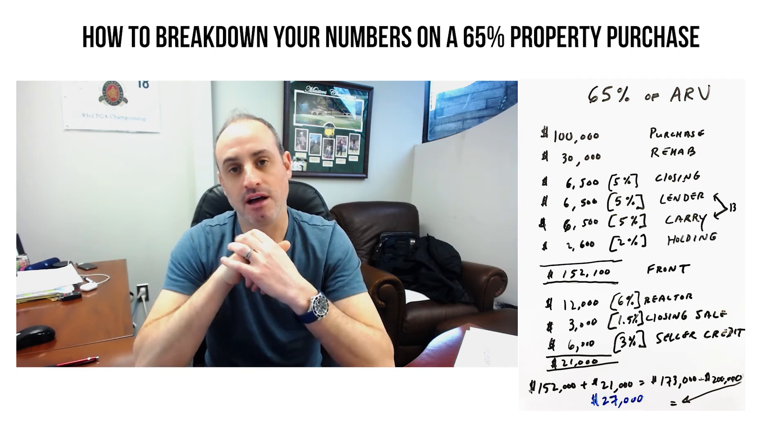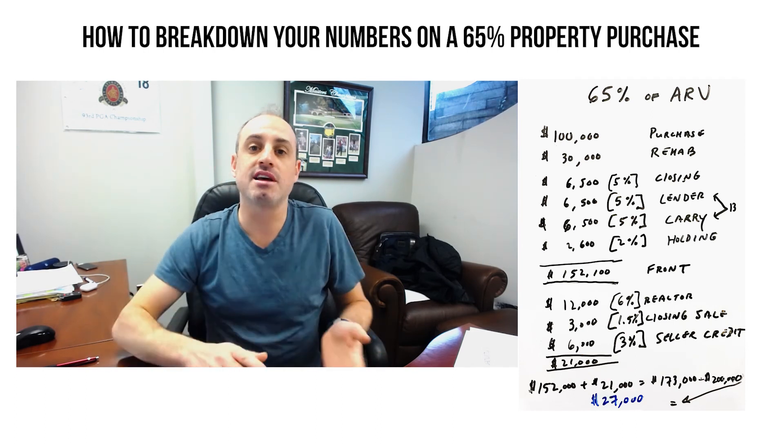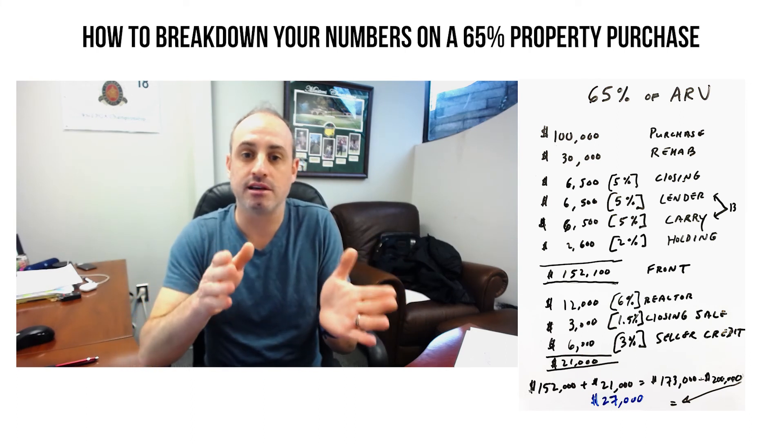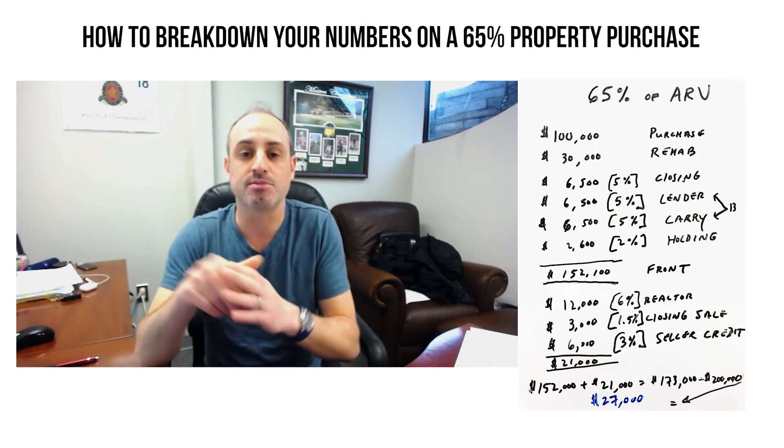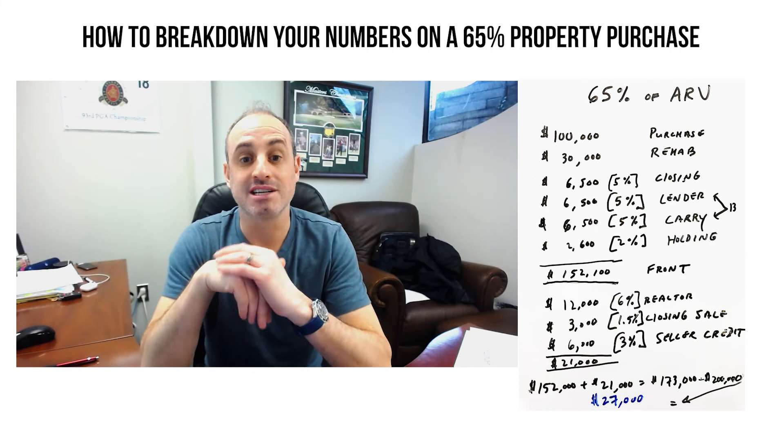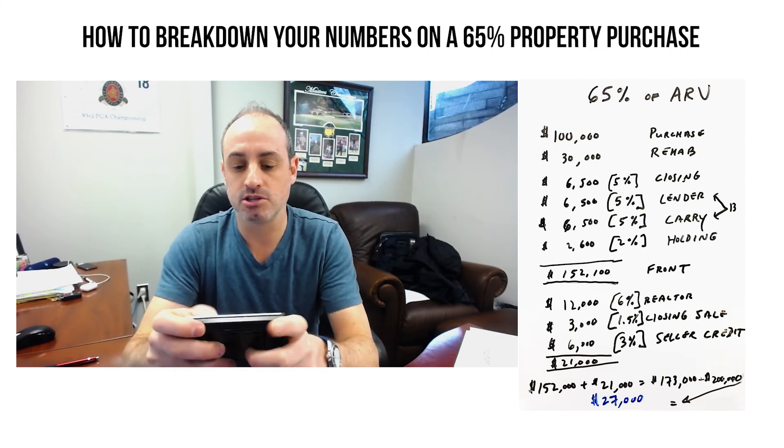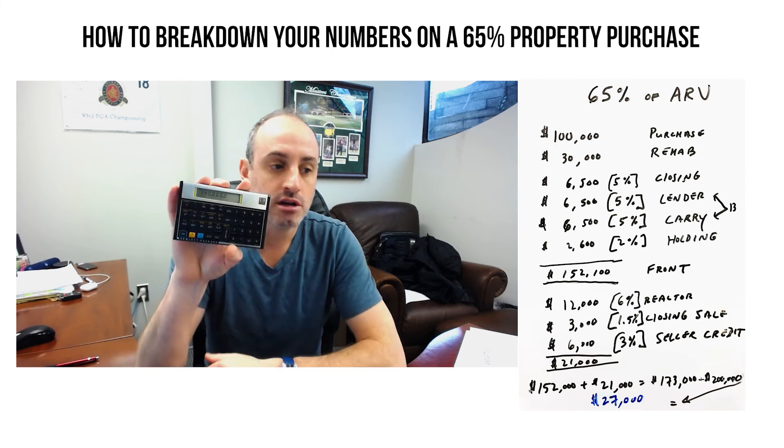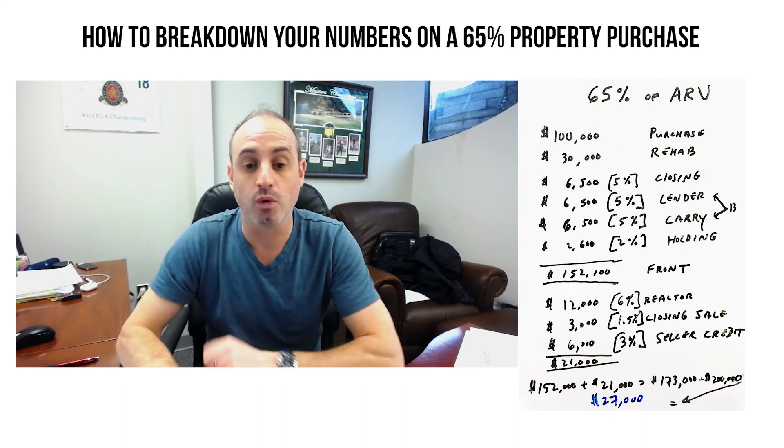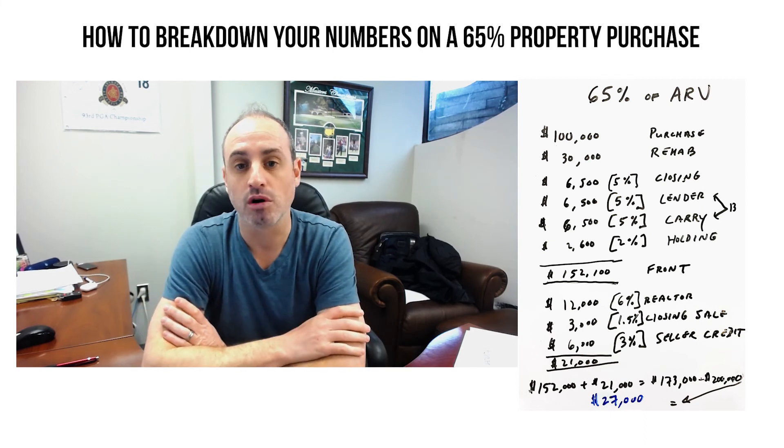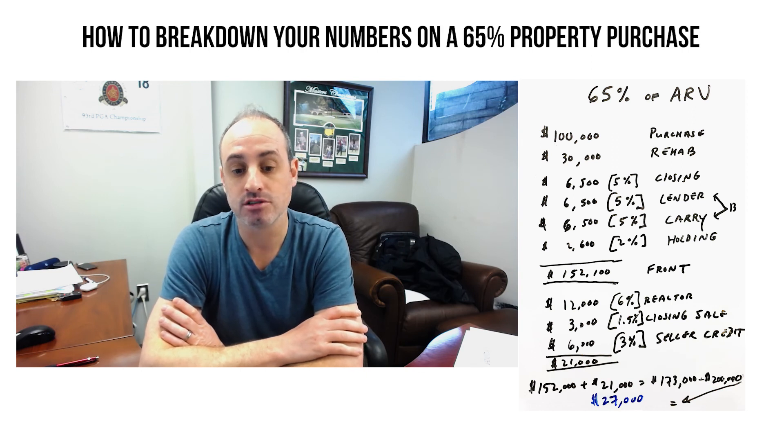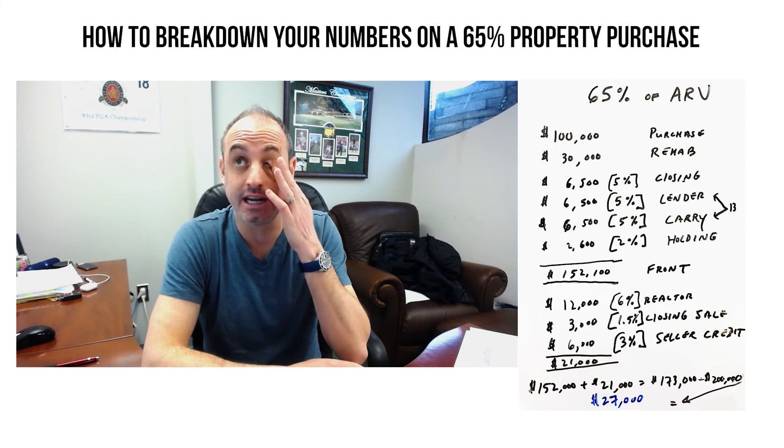Now a lot of investors want to push this to maybe the 70%. Well, you see if you're buying this thing at 70%, in this particular case that's $140,000. So that's $10,000 more in costs happen if you had to pay more for it. So that means your profit goes from $27,000 to $17,000. It's getting a little bit slim.